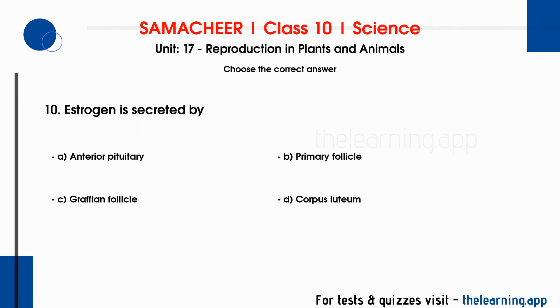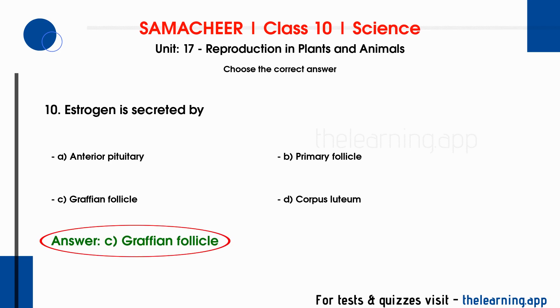Tenth question: estrogen is secreted by DASH. Options are A. Anterior pituitary, B. Primary follicle, C. Graafian follicle, D. Corpus luteum. The correct answer is option C, Graafian follicle.